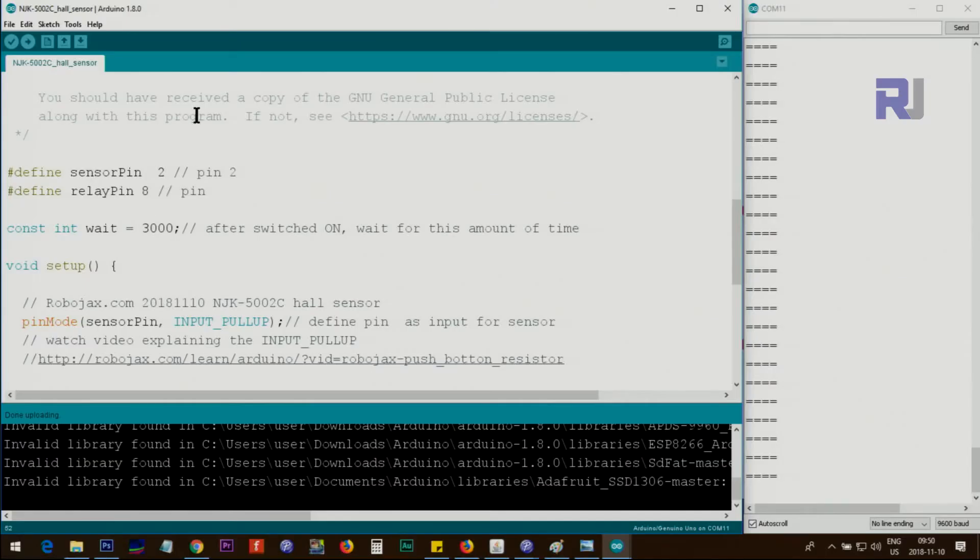Let me now explain the code. We first define the sensor pin, pin 2, with no semicolon, so you can use any digital pin that you want. This is the relay pin, pin 8, which we use to connect to the relay. This wait variable of type integer is 3000 milliseconds or 3 seconds. This is the amount of time that when the switch turns on the relay, you want to wait. If you want it to be real-time, just make it zero, and as soon as the switch is off, the relay will be off.